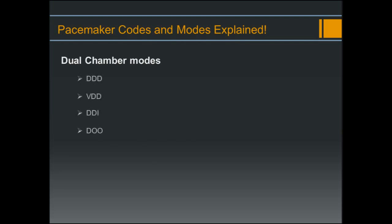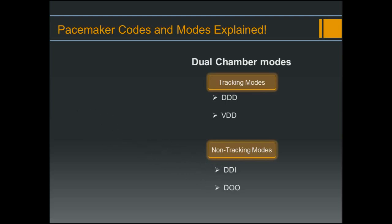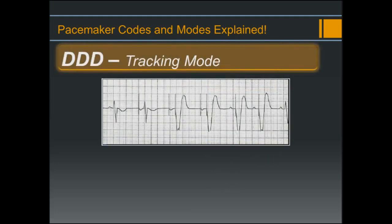The dual chamber modes are DDD, VDD, DDI, and DOO. It's easier to break dual chamber modes into two categories: tracking modes and non-tracking modes. The tracking modes are DDD and VDD, and the non-tracking modes are DDI and DOO. First up is DDD tracking mode.